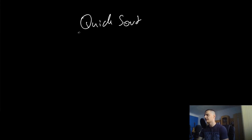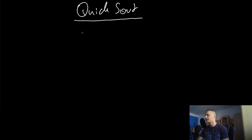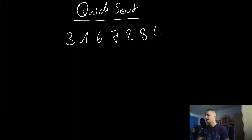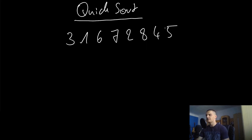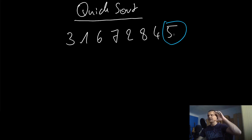Let's talk about the basic idea behind quicksort. The idea is that we work with so-called pivot elements. We have a list like 3, 1, 6, 7, 2, 8, 4, 5, and what we do is pick a pivot element — usually the first one or the last one, always the same position, for example always the last one. We then arrange all the other elements so that larger elements are on the right side and smaller elements are on the left side.